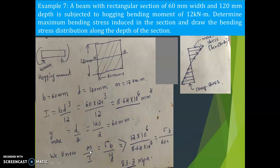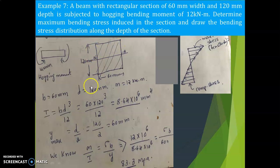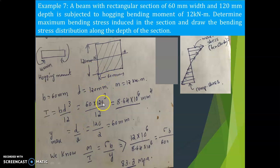The given dimensions are: width B = 60 mm and depth D = 120 mm. First let us calculate I. For a rectangular section, I = BD³/12. With B = 60 and D = 120, we get I = 8.64 × 10⁶ mm⁴.